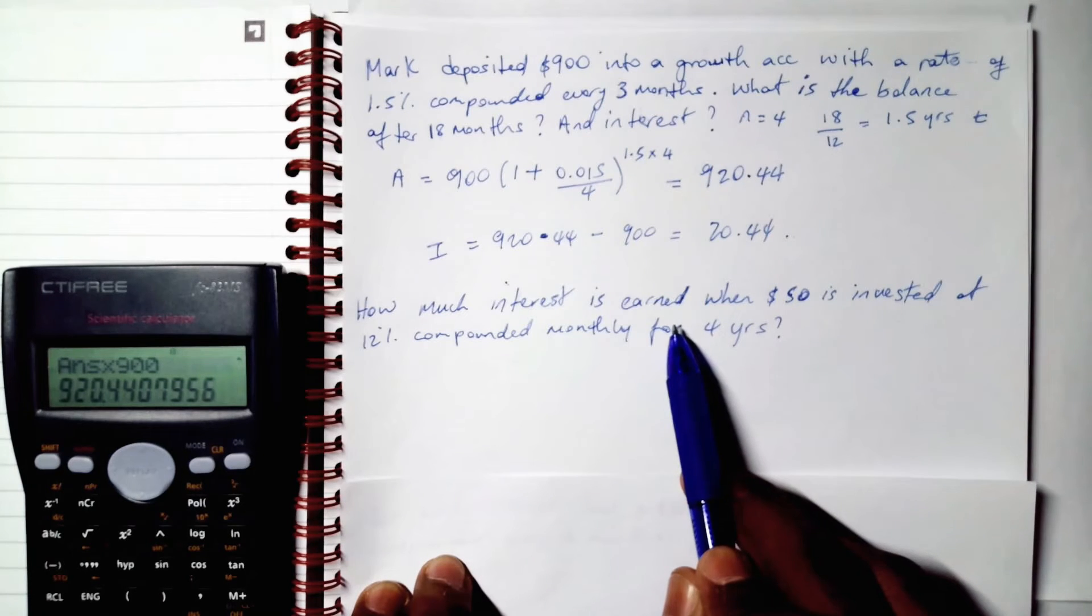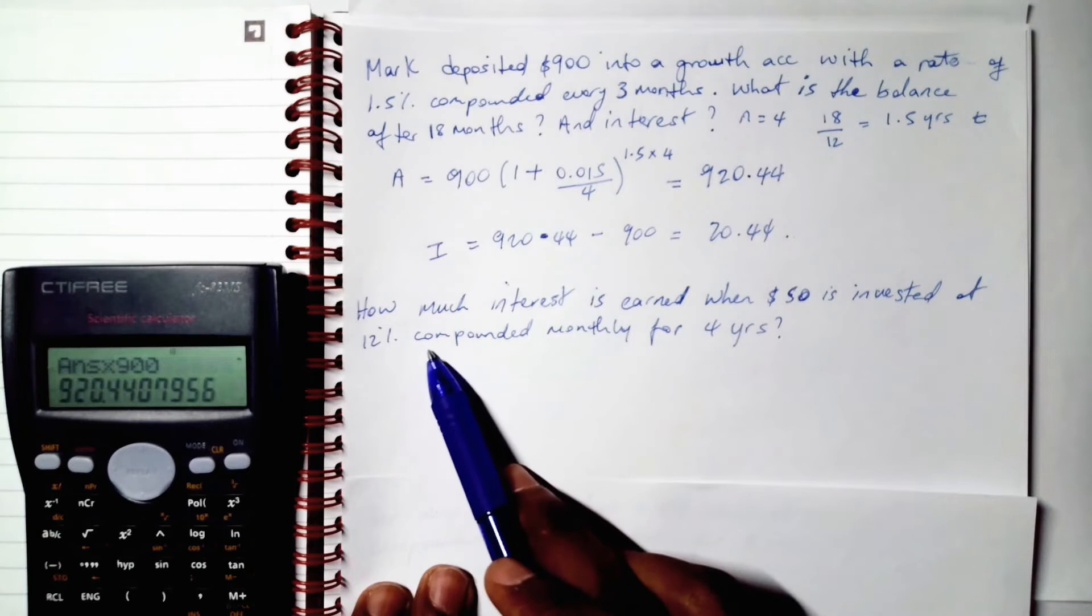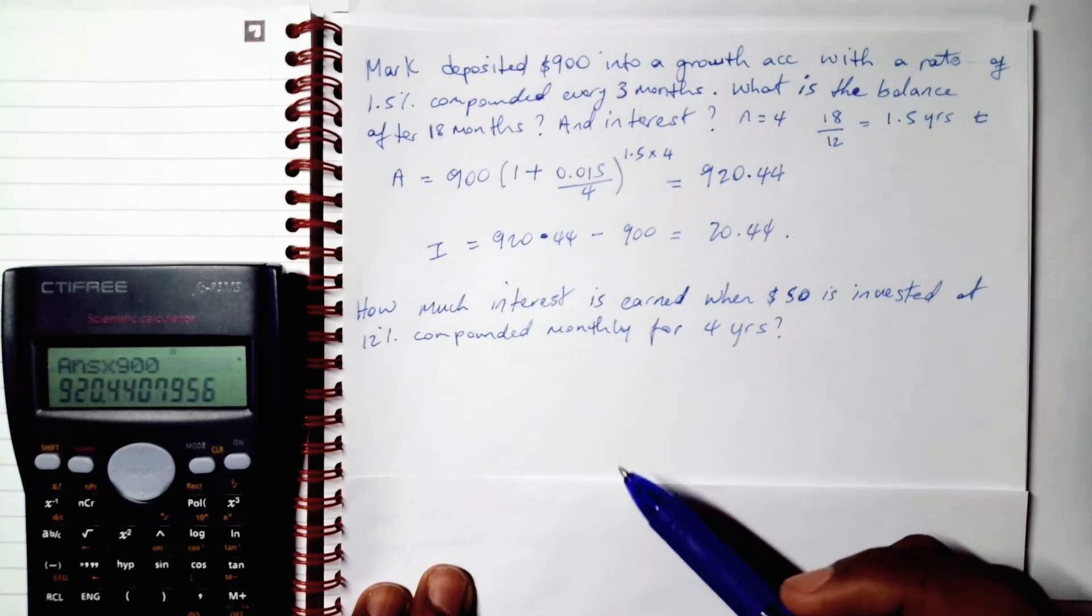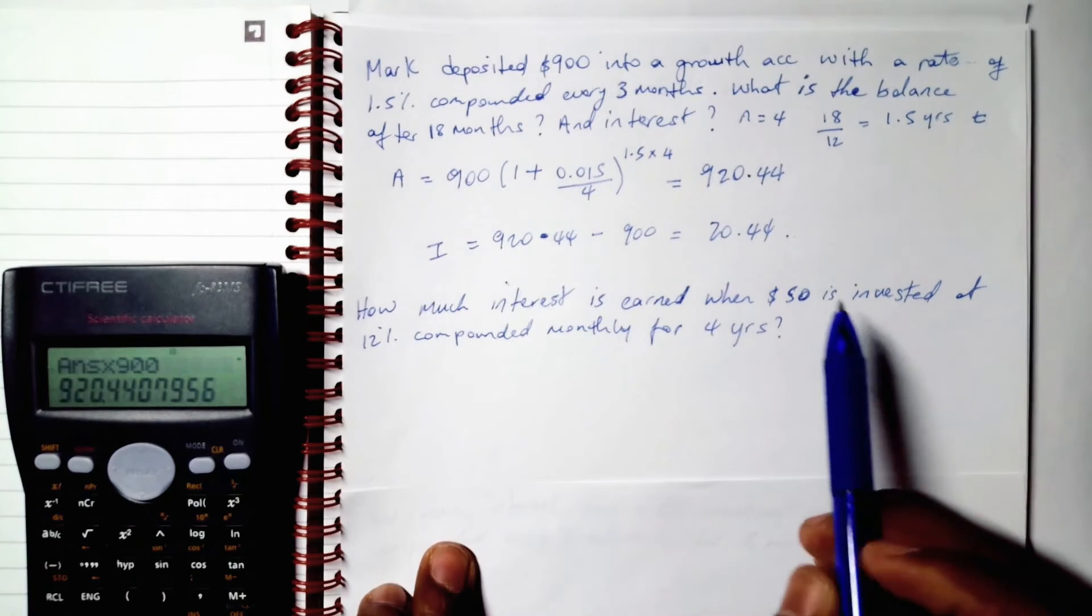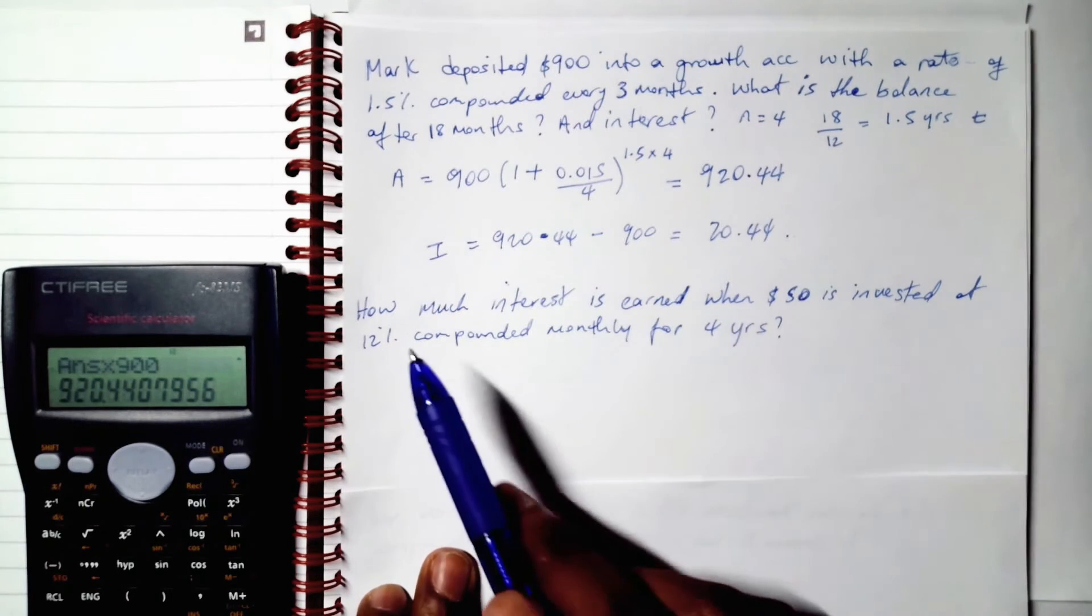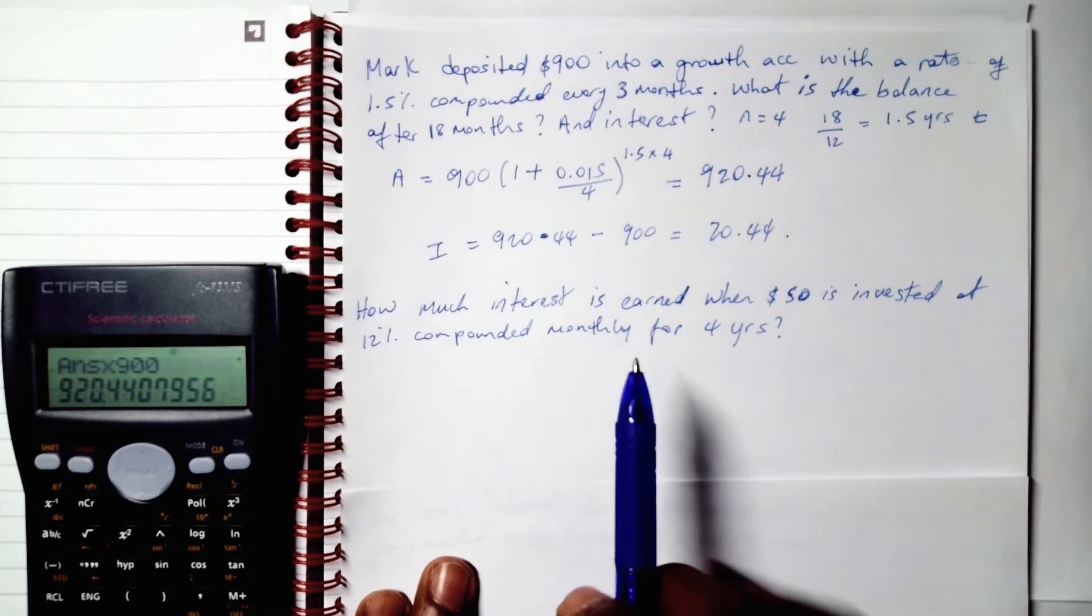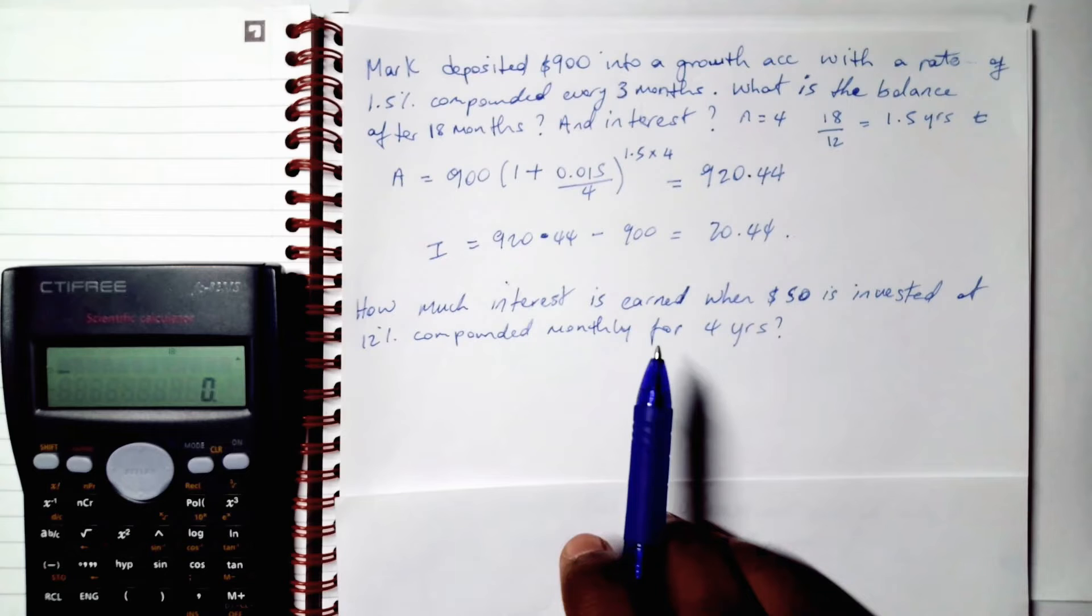How much interest is earned when $50 is invested at 12% compounded monthly for 4 years. All right. So the $50 is invested at an interest rate 12% compounded monthly. So let's think about that now. Let's think about that. The interest rate is compounded monthly.